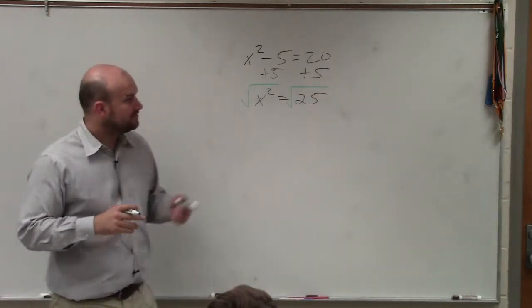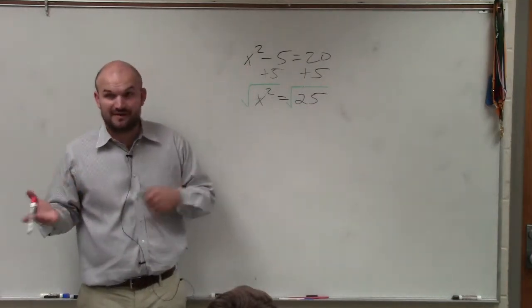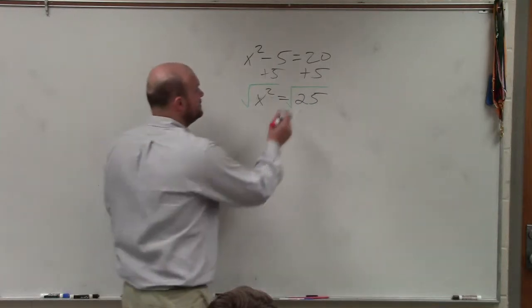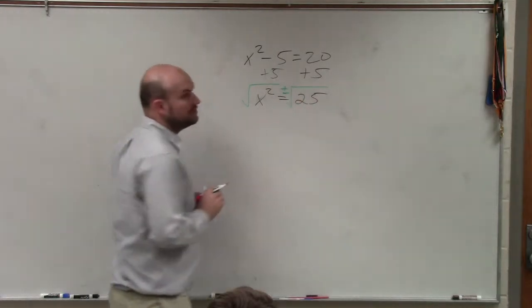Because 5 times 5 is 25, and negative 5 times negative 5 is 25, so you have to include the plus or minus.